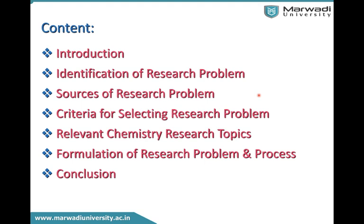Like in the periodic table there are several elements — gold, silver, thorium, uranium — they all have sources in particular areas. Similarly, research problems also have sources and certain ways from which we can easily get ideas for research. The next topic is the criteria for selecting research — what are the rules we will follow to select the research problem. It's basically a rule book; if we follow those rules, we can easily find a potential research topic.